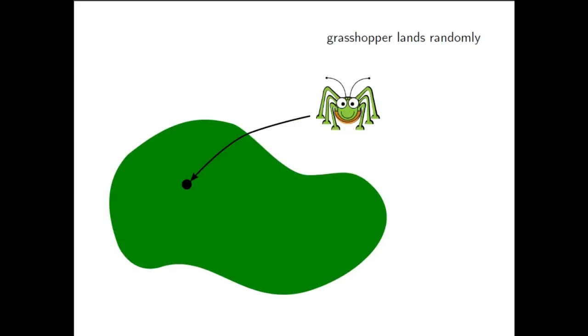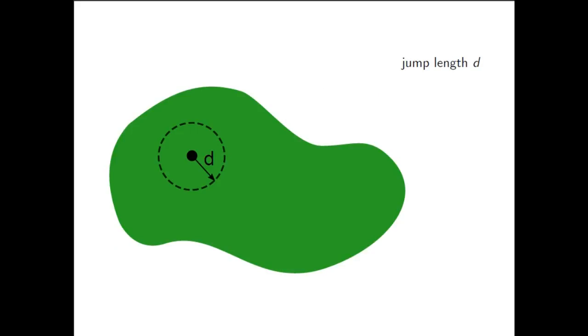A grasshopper lands on a random point of this lawn. It then makes one jump of length d in a random direction. For example, if this is its starting point, a jump of this particular length can bring it to any of the points on the dashed circle. All these points are again on the lawn.